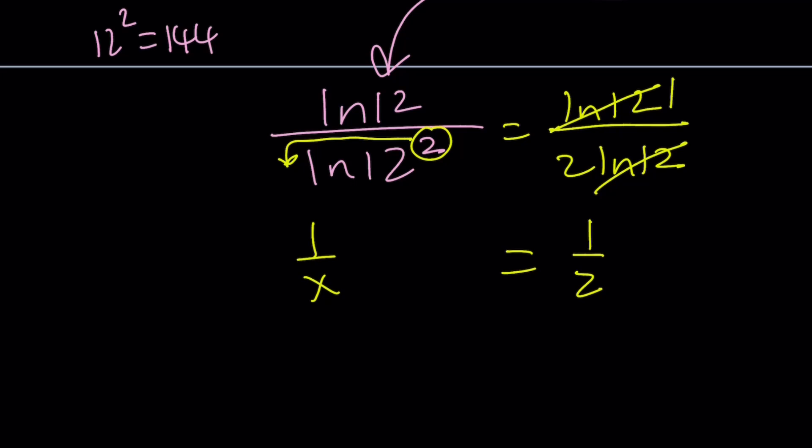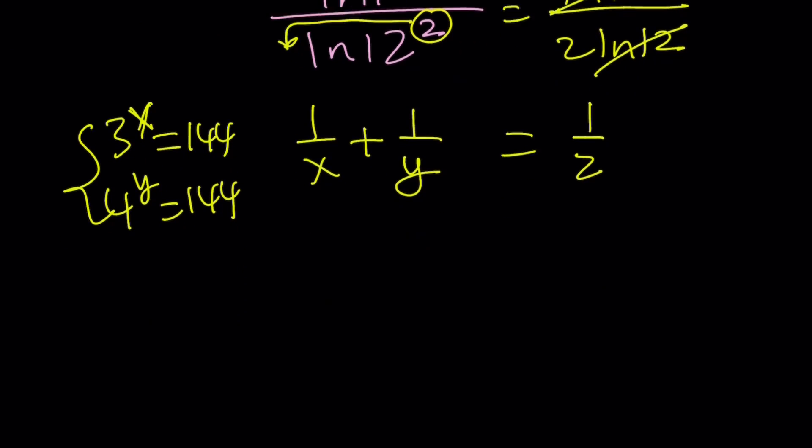But what was I looking for? 1 over x plus 1 over y. And where does x and y come from? Well, we were given 3 to the x equals 144 and 4 to the y equals 144. So that is going to be our answer. And this brings us to the end of the first method, not to the end of the video. So don't go away yet.